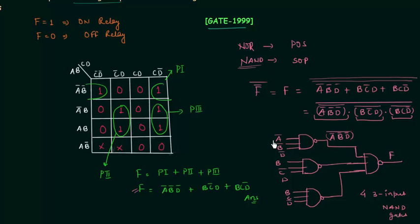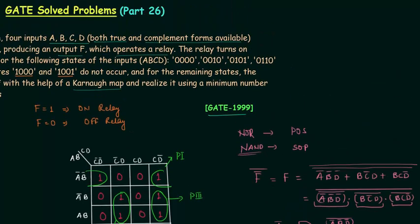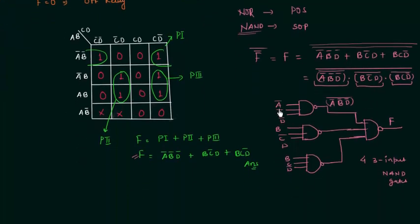I am directly using the complement of the variables because in the problem it is given that true and complemented forms are available. So we don't have to obtain A', B', C', or D' using a NAND gate — we have these values so we can directly use them. This was a very interesting problem and this is a new thing we have learnt in this lecture. Try to note it somewhere so that you can revise it before your exams. See you in the next one.